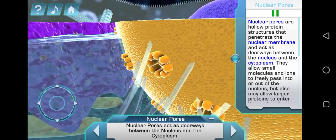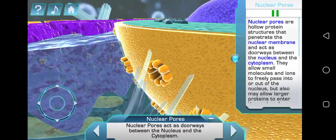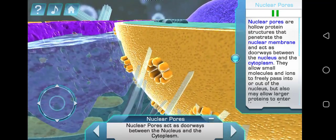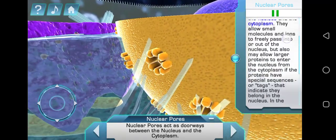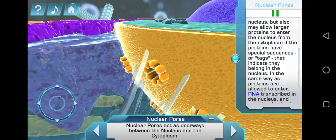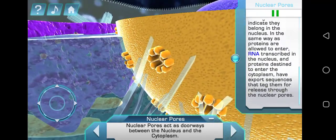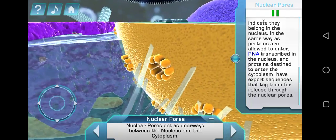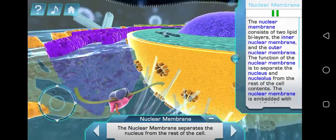Larger proteins can enter the nucleus from the cytoplasm if they have special sequences or tags that indicate they belong in the nucleus. In the same way proteins are allowed to enter, RNA transcribed in the nucleus and proteins destined to enter the cytoplasm have export sequences that tag them for release through the nuclear pores.